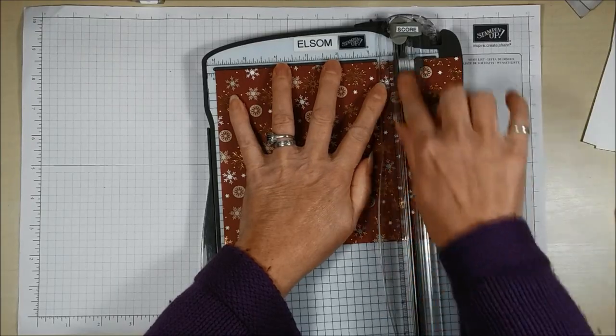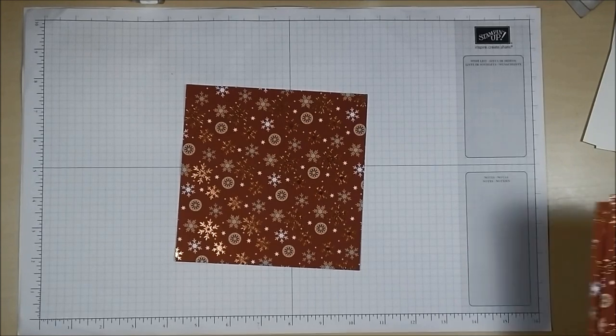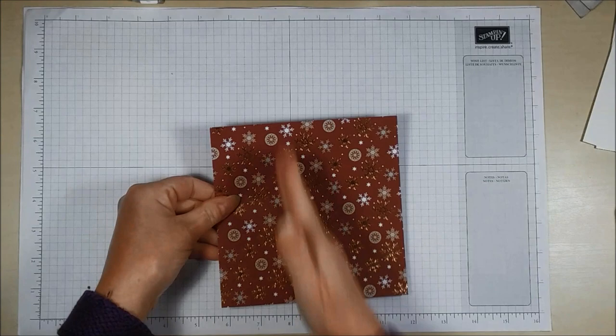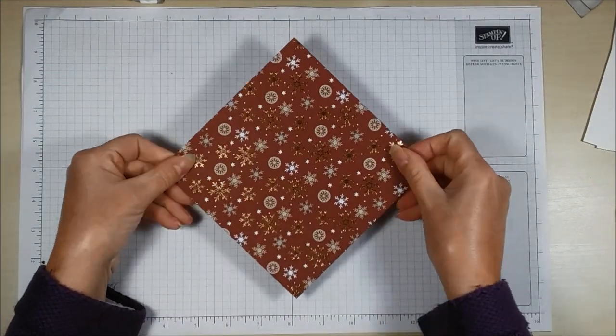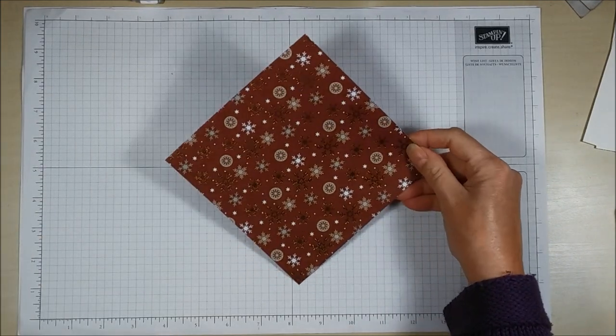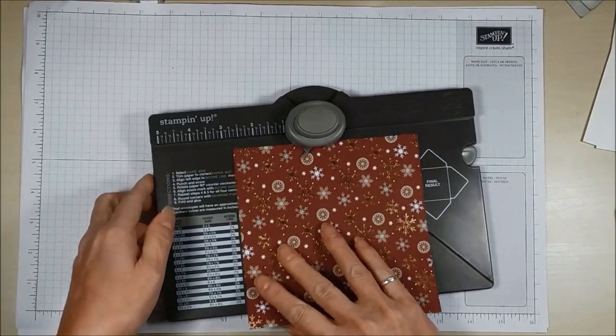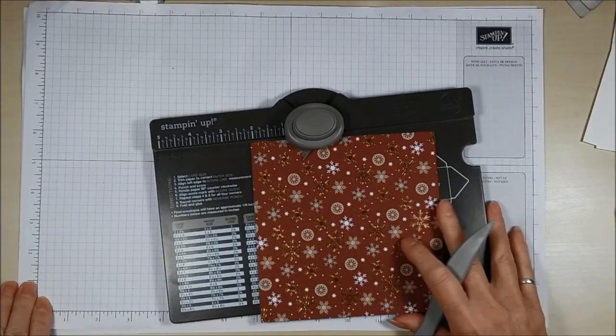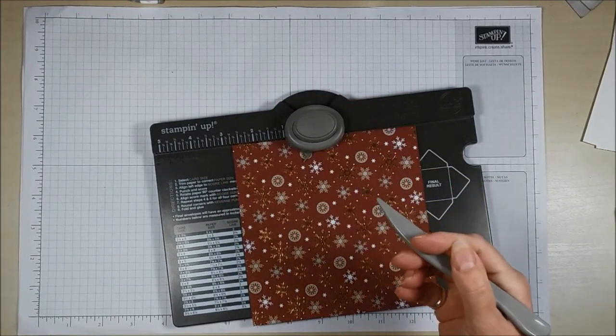When I'm making little gifts like this, what I try to do is to choose paper that doesn't have a specific direction. Because even if you get a piece of paper and you cut it with a line going a certain way, once you start to actually use the envelope punch board to make the pouch, it then turns everything diagonally and it can look a little bit odd sometimes. So what I have here then is my six by six paper, I have my envelope punch board and the scoring tool that comes with that punch board.